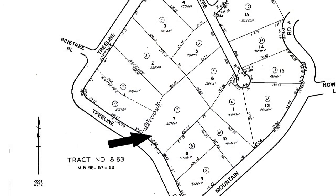Last but not least on a preliminary title report is the plat map. It shows the book, page, lot, and tract, and actually identifies which parcel is in question in this report, as you can see by the arrow above. This concludes the preliminary title report and how to read and understand it. If you have future questions or concerns, you can always contact your local title representative or call the title officer listed on this report. Thank you for your time — make it a great day.